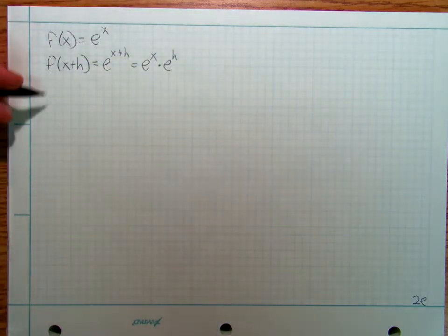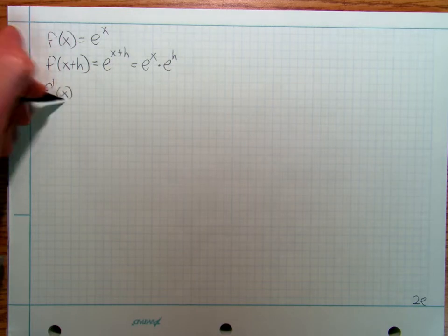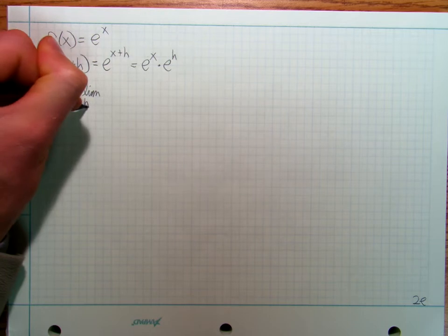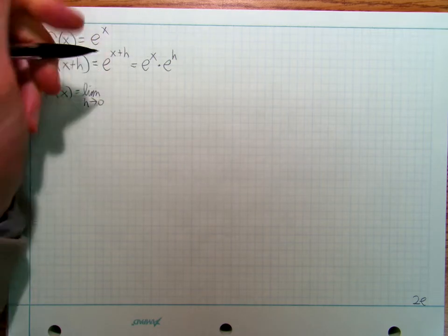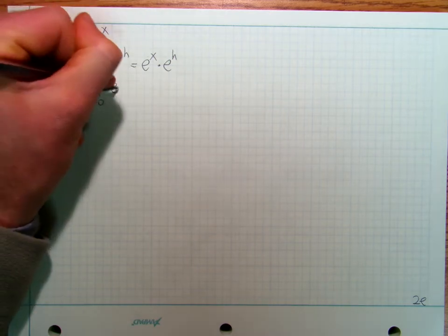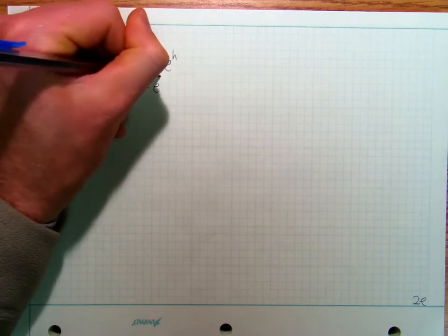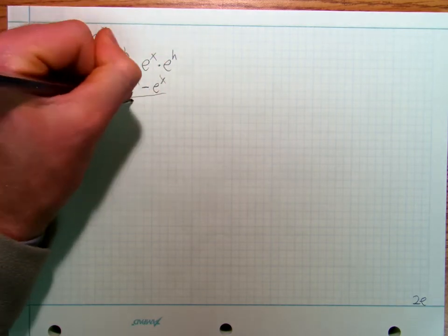So I can say that f'(x) is equal to the limit as h approaches zero of e^x times e^h minus e^x all over h.